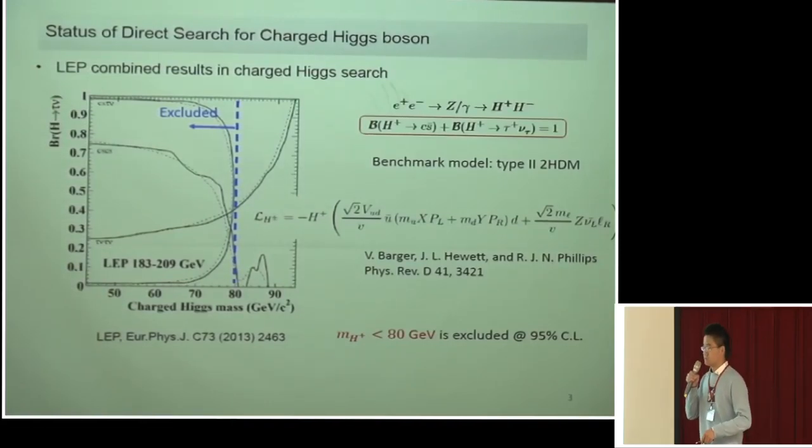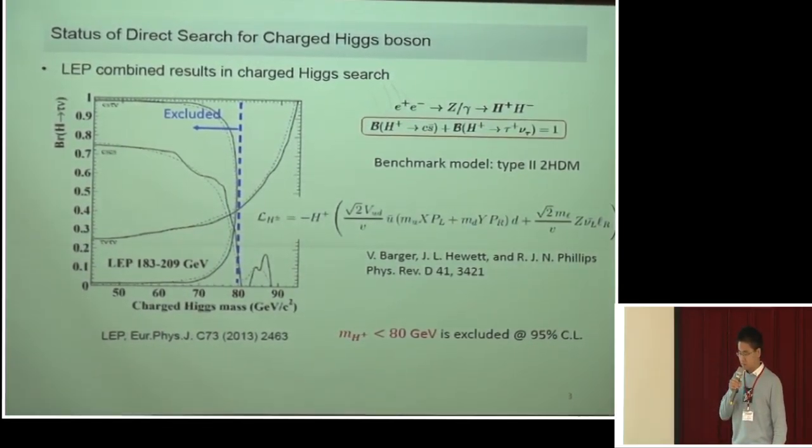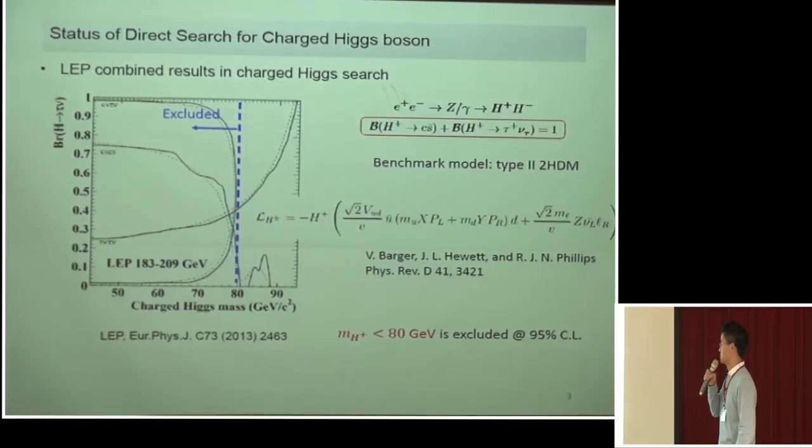First, I will show the LEP combined search in charged Higgs boson in this figure. It's apparent that the charged Higgs boson below 80 GeV has been excluded. However, such a study is based on the model of a type-2 Higgs doublet model, which assumes that the sum of the branching ratio of charged Higgs boson into s b-bar and tau nu equal to 1. And this motivates that the interaction of the fermions are proportional to mass. While this constraint cannot be applied directly to the singlet case.